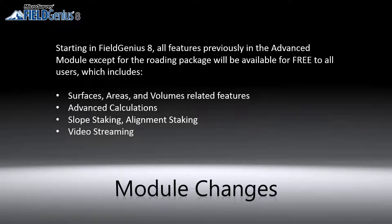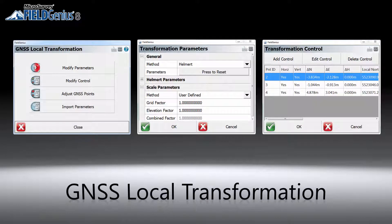Now let's go see some of the new features we have added. One of the biggest changes in FieldGNS 8 is a redesigned GNSS local transformation routine, featuring an all-new and easy-to-use workflow, the ability to export and import localization files, easier management of control point pairs, and Helmert transformation in addition to the plane similarity. The new localization routine will make your job setup a lot easier.